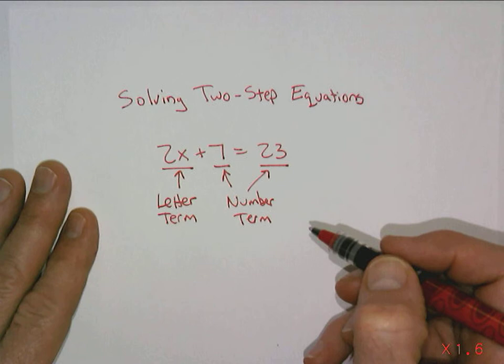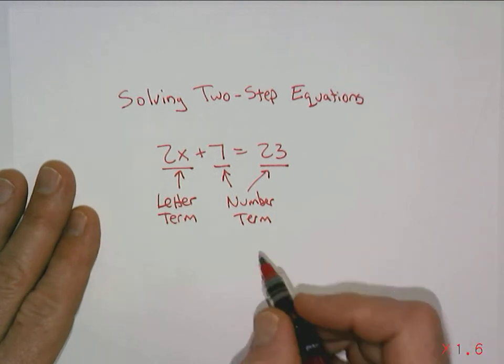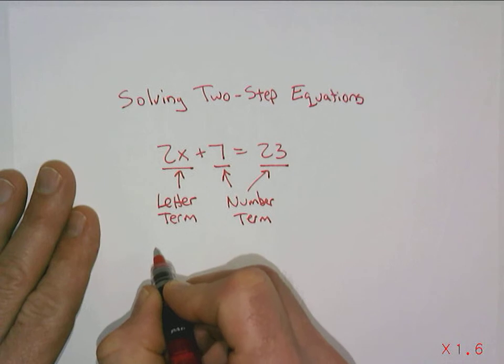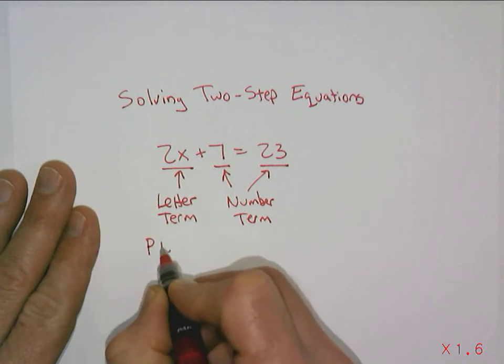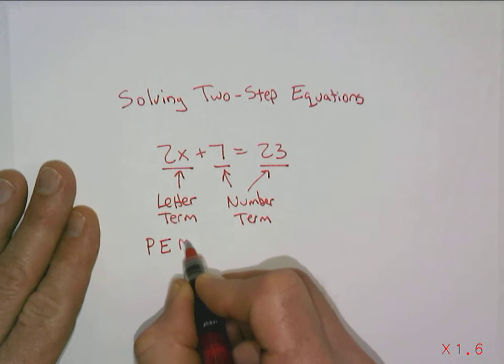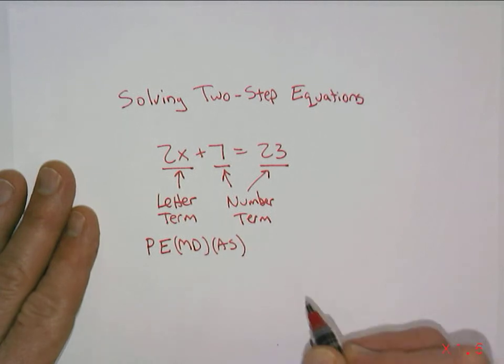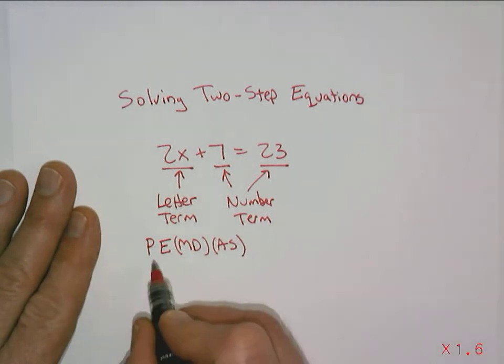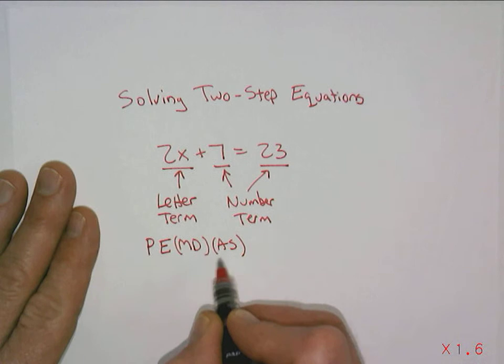Now as we think about solving equations or doing mathematics, oftentimes we work with what's called an order of operations which would be parentheses and then exponents, multiplication and division which are equal operations, and then addition or subtraction which again are equal operations. Some people have remembered the acronym PEMDAS to remember this order: parentheses, exponents, multiplication, division, addition, subtraction.